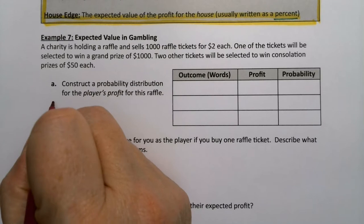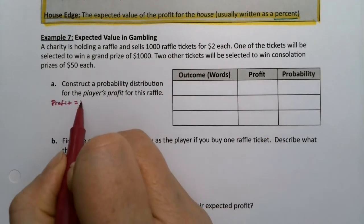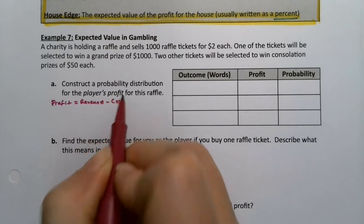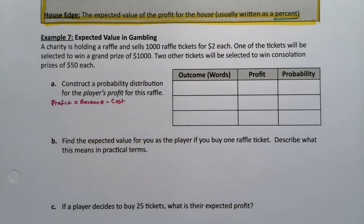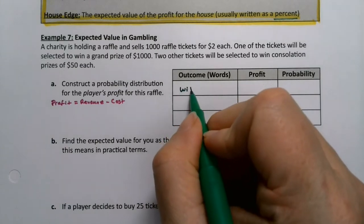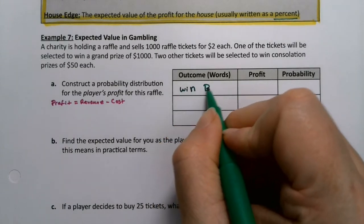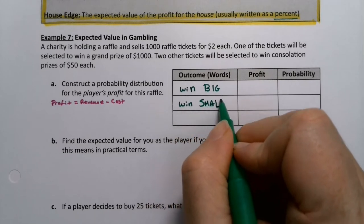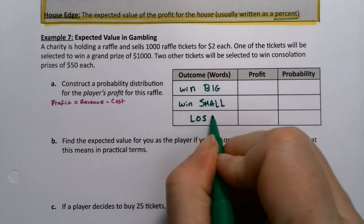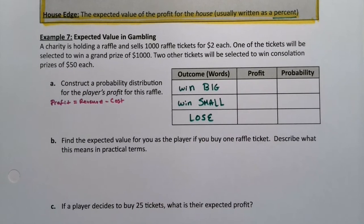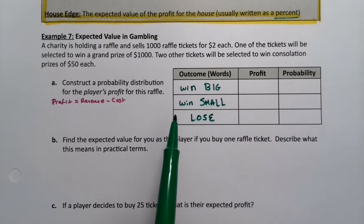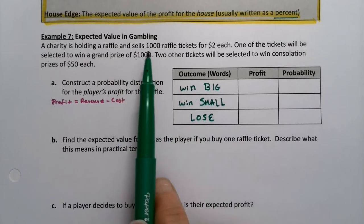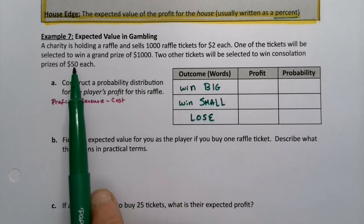Let's remind ourselves that profit is revenue minus cost. When you play this game, you can either win the big money, you can win the small money, or you can lose. Those are the three options for this game. I could have just done a 50-50 raffle, but that was kind of boring, so I made this kind of jazzier.